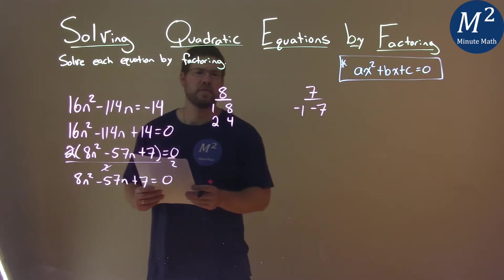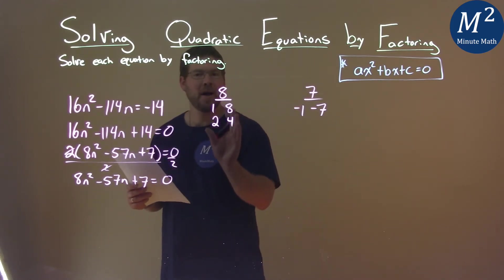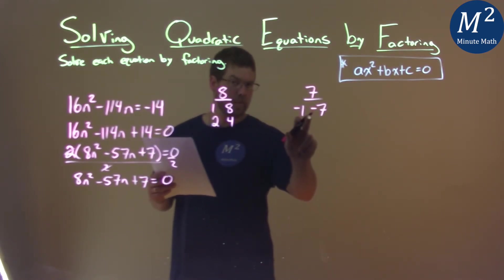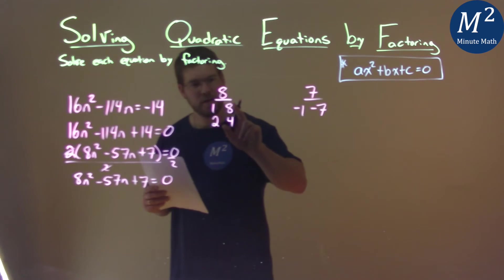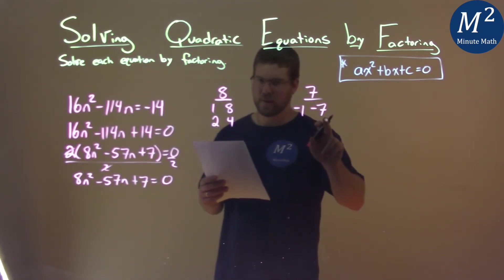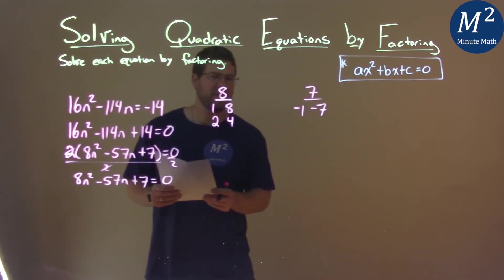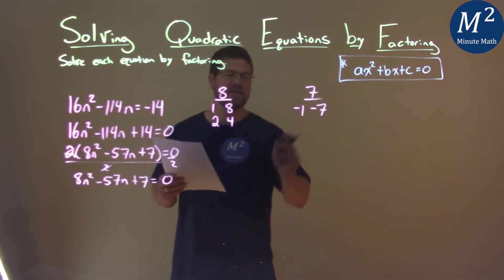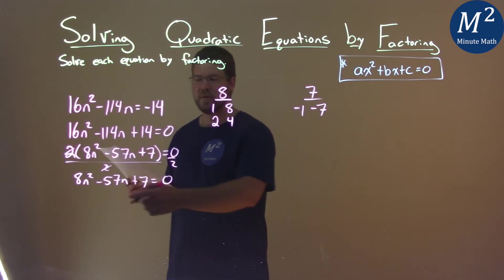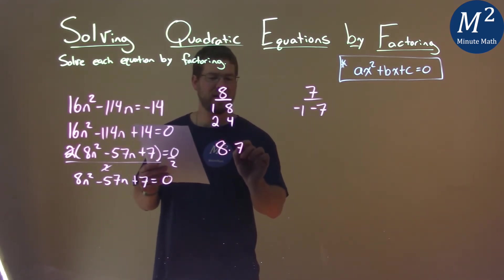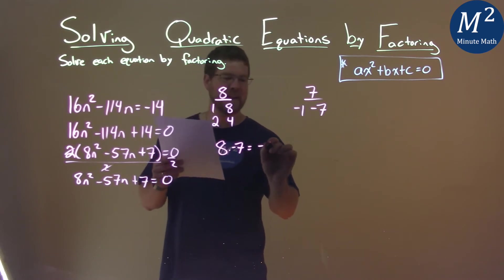So now I have to ask myself, what pair, one of them times the other pair, plus another value in the first pair times the other value in the second pair gets me negative 57. And really my first guess is dealing with 8 times negative 7. That gets me really close to negative 57. So 8 times negative 7 equals negative 56.